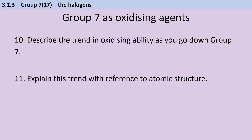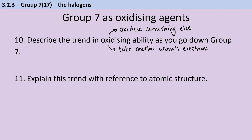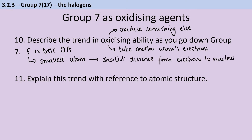Oxidizing ability is the ability to oxidize something else, and oxidation is losing electrons. When we talk about oxidizing ability, we mean how good at stealing another atom's electrons is this particular atom. The best oxidizing agent in group 7 is fluorine, and as you go down the group, the oxidizing ability gets less and less. The reason is that fluorine has the smallest atoms, meaning outer shell electrons are closer to the nucleus. Also, because fluorine has fewer shells, there is less shielding from the electrostatic attraction of the nucleus to those electrons being taken from another atom.